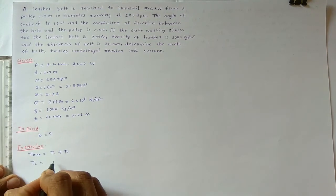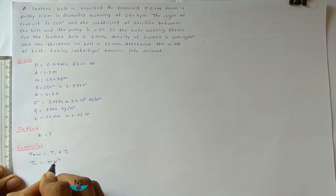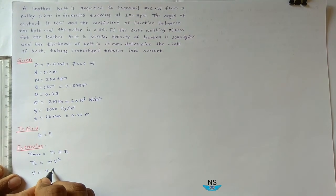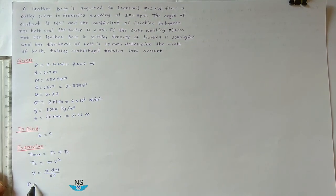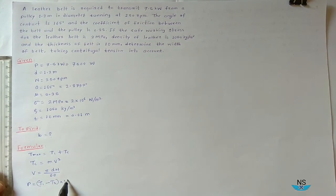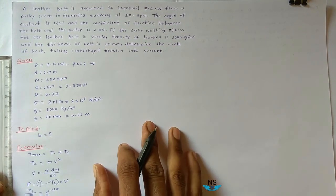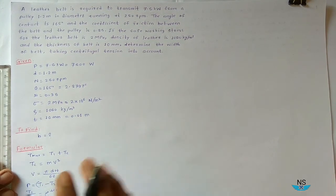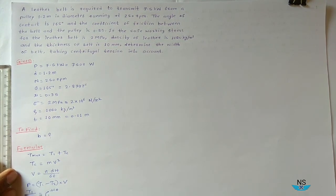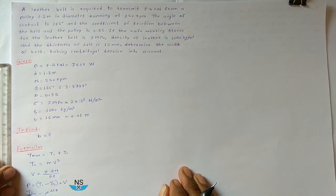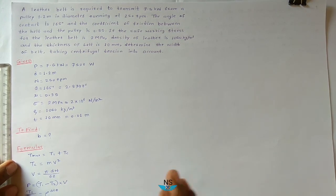Tc is equal to m times V squared. V is equal to pi times d times n divided by 60. To find T1 and T2 we require the power formula: P is equal to T1 minus T2 times V. The tension ratio is T1 divided by T2 equals e raised to mu theta. Also, T max is equal to sigma times B times t.